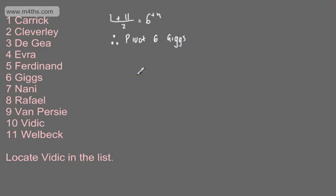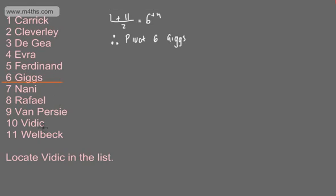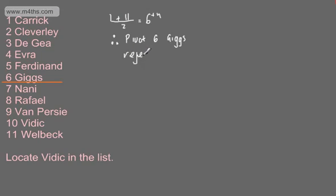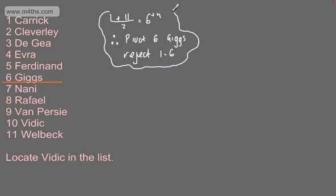We're looking for Vidic. Quite clearly, Vidic is lower in the list than Giggs - in alphabetical order, V comes after G. So what we can now do is discard the list. We reject now 1 to 6, as we know Vidic is going to appear in the second half of the list. So we've simply said 1 plus 11 divided by 2 is the 6th term, therefore our pivot is Giggs, and we reject 1 to 6.